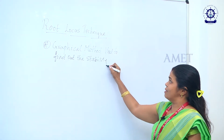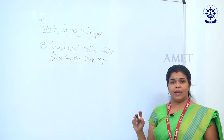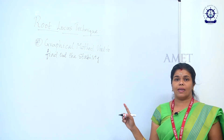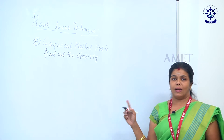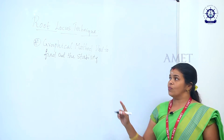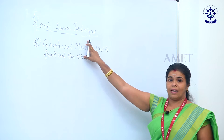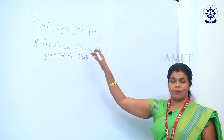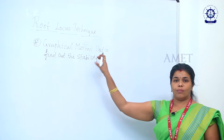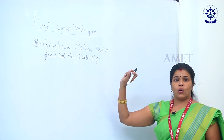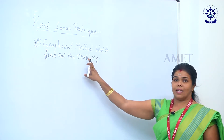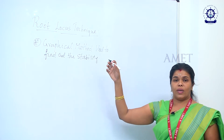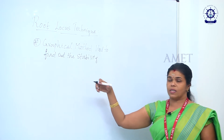If you are designing a system, stability is very, very important. Using this root locus technique we are going to find out the stability of the system. The root locus technique is applied to the open loop system. In control systems we have both open loop as well as closed loop systems, but this root locus technique is meant for an open loop system.